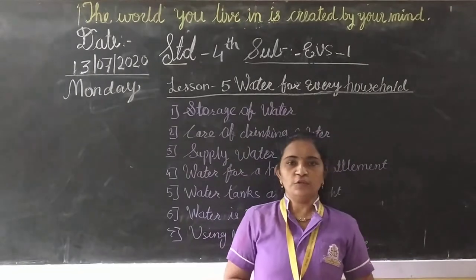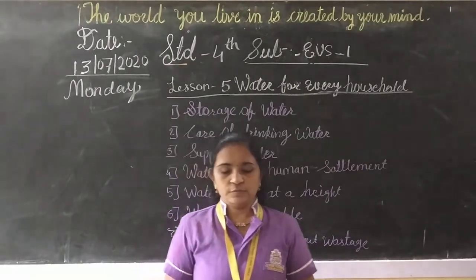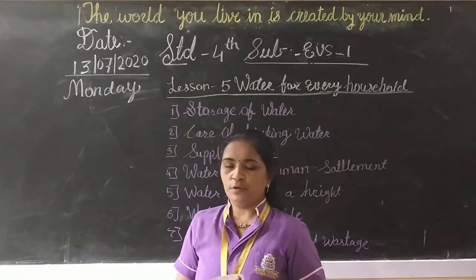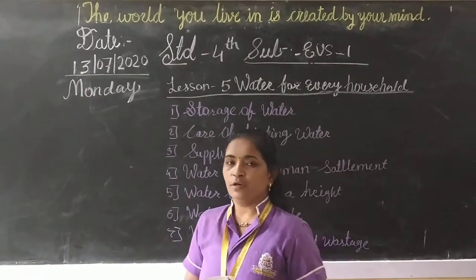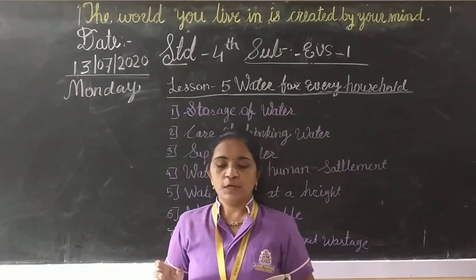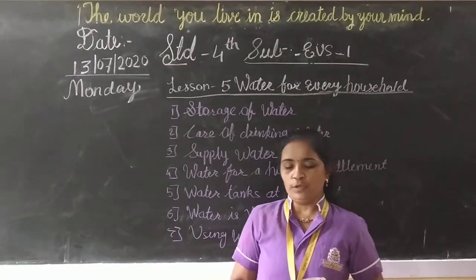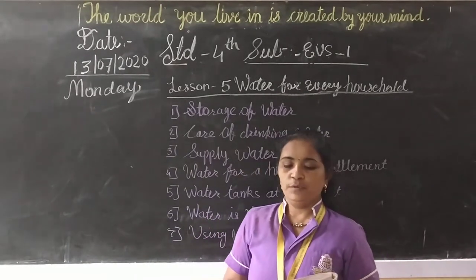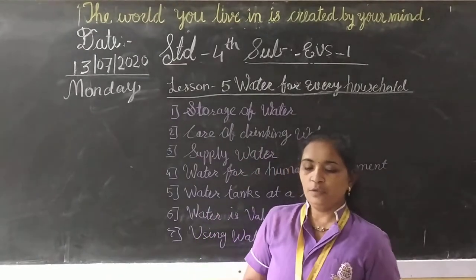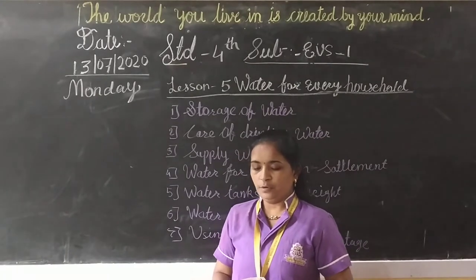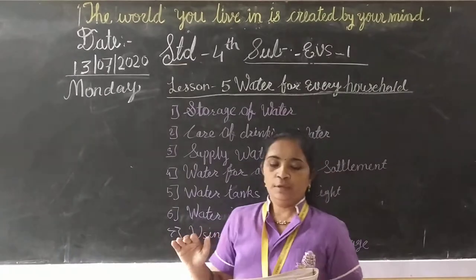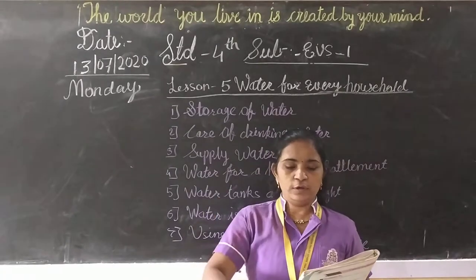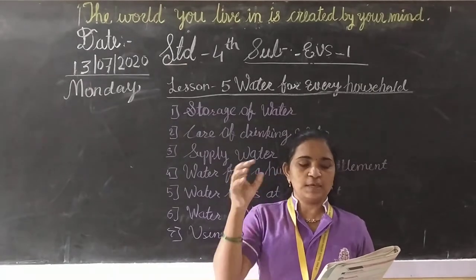We must take special care of water that we store for drinking and cooking. If we consume contaminated water, it can cause disease. That is why we keep drinking water containers covered. This prevents dust and other rubbish from entering the water. If we dip our hands in the water to take it out, the dirt on our hands can enter the water, so we use a dipper to take the water out. Otherwise, we replace the lid at once.